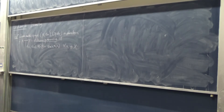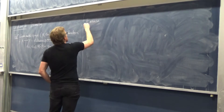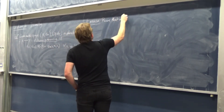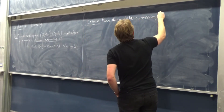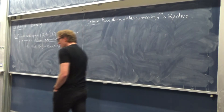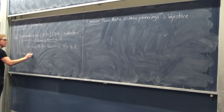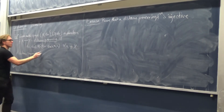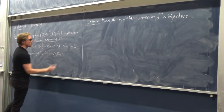Okay, exercise. So let's prove that a distance-preserving function is injective. Remember, injective means: if F(x) equals F(y), then x equals y. So a distance-preserving function which is bijective is called an isometry.